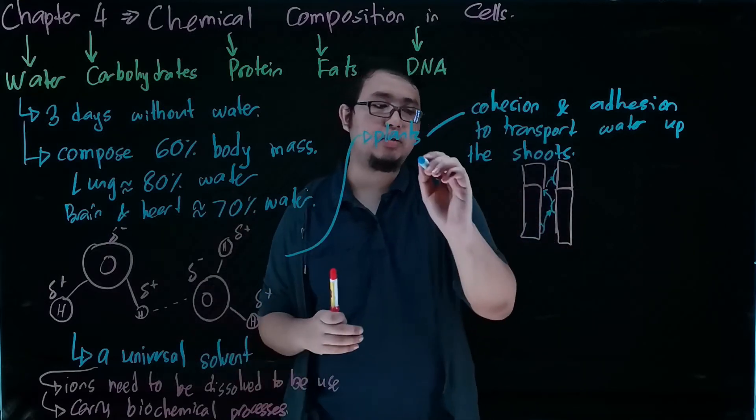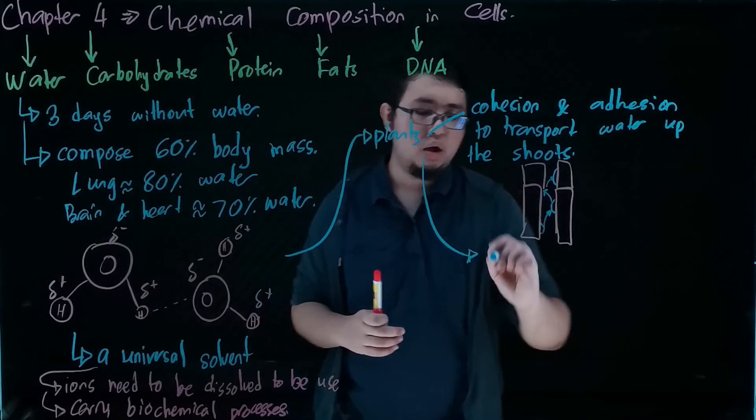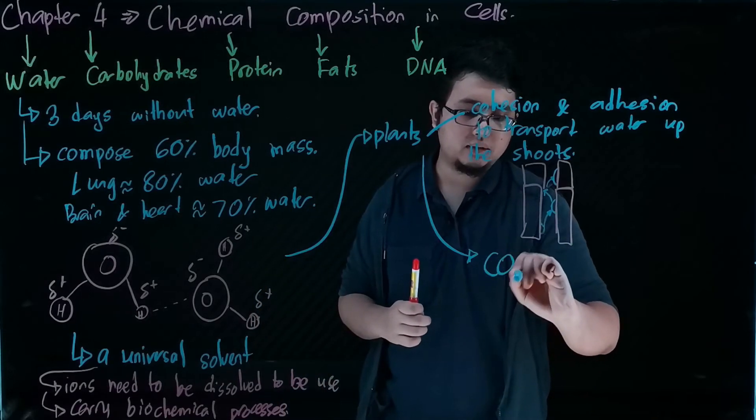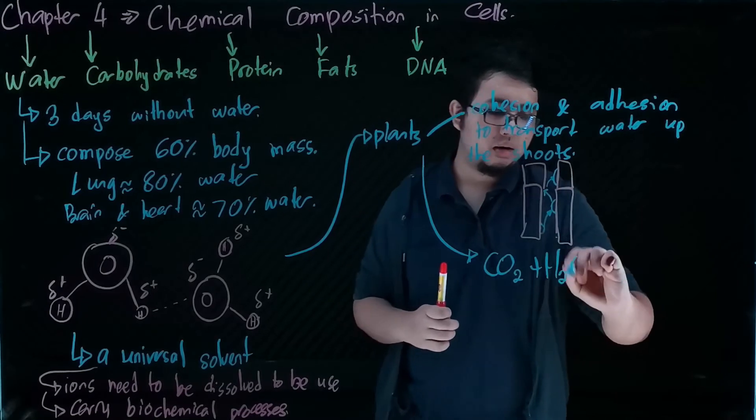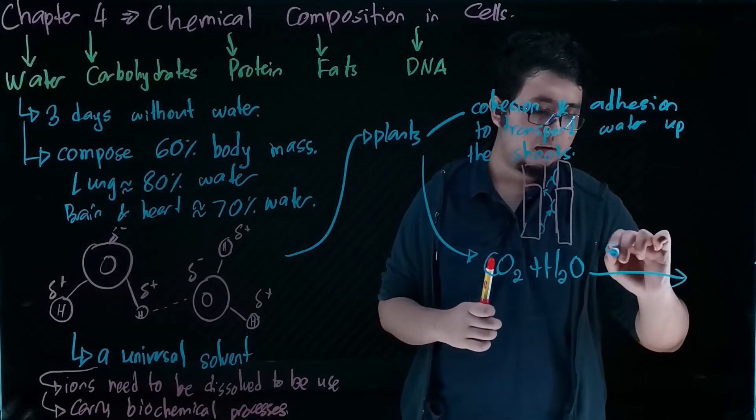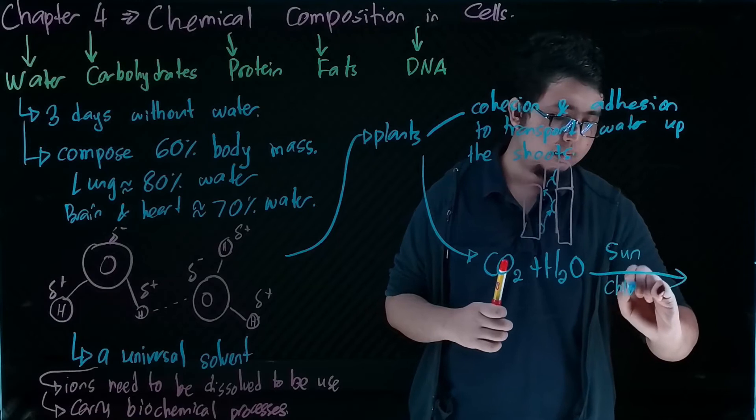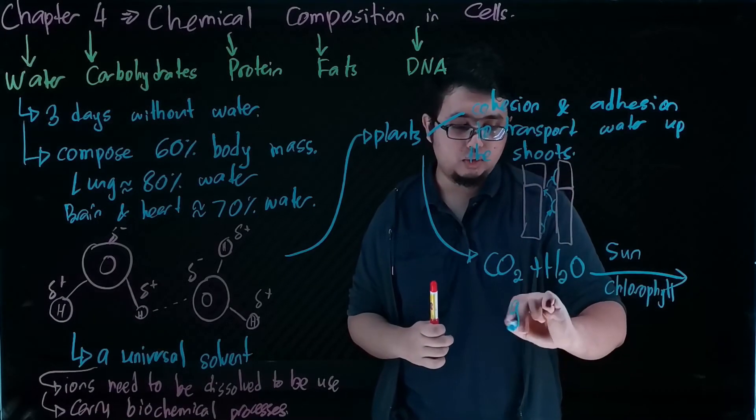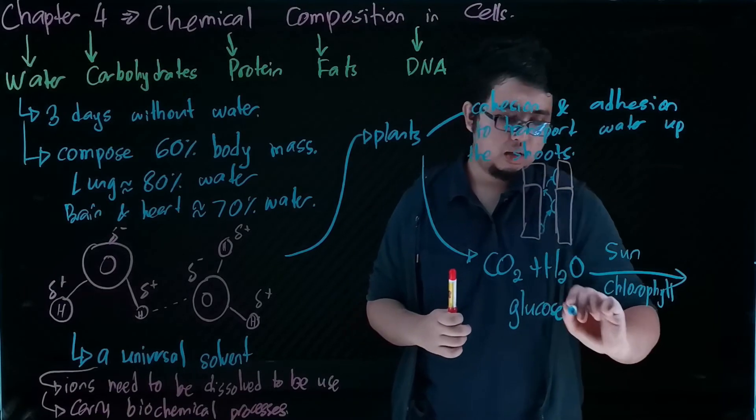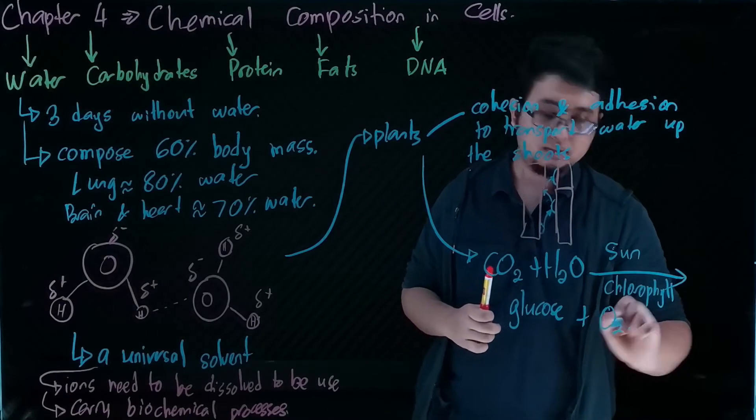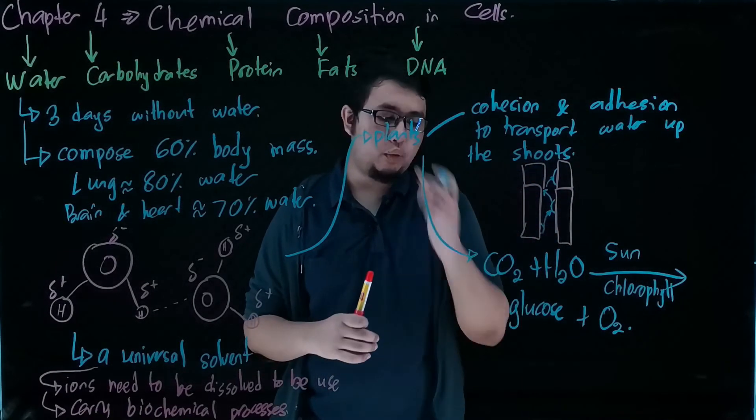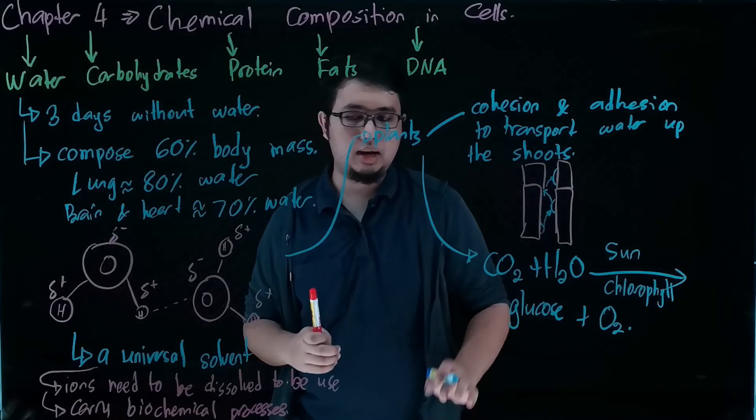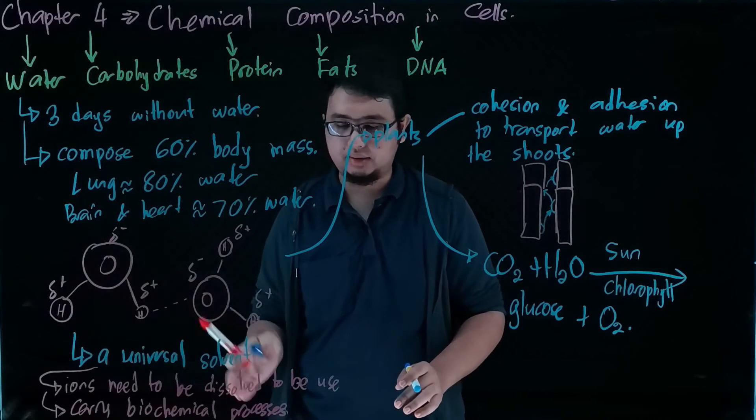This ability allows water to be transported up from the roots to the shoot. Why is water so important in plants? Because in photosynthesis, water is needed along with carbon dioxide to form our glucose and oxygen gas.